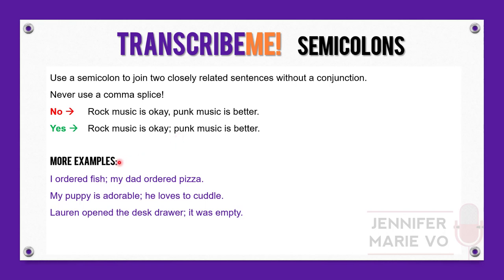Here are more semicolon examples: "I ordered fish; my dad ordered pizza." Again, semicolon and lowercase letter. "My puppy is adorable; he loves to cuddle." "Lauren opened the desk drawer; it was empty." All of these use a semicolon to connect two closely related sentences.